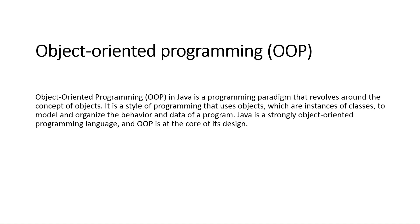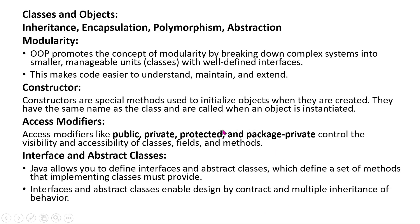OOP is a style of programming where you control the data — meaning how data is accessed, where data is accessed, where we define methods, and how we can access those methods. This all is controlled by OOP. In this slide, we are going to cover some basic terminologies: modularity, constructor, access modifiers, interface, and abstract class. First is modularity — OOP promotes the concept of modularity by breaking down complex systems into smaller manageable units called classes with well-defined interfaces.